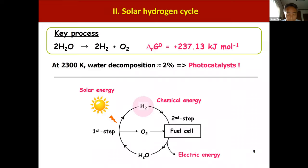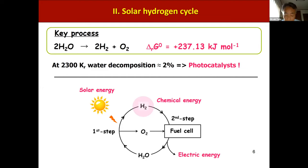The second section is the solar hydrogen cycle, involving water splitting as the key process. Water splitting is energetically a large uphill reaction and progress by heating is practically impossible, because only 2% of water is decomposed even at 2,000 degrees Celsius.